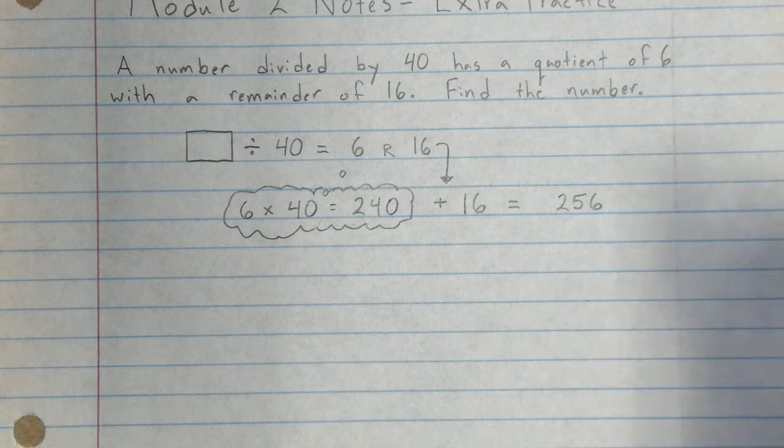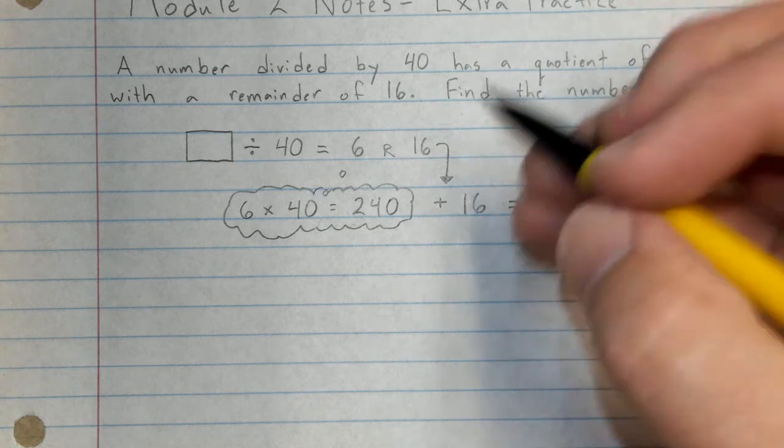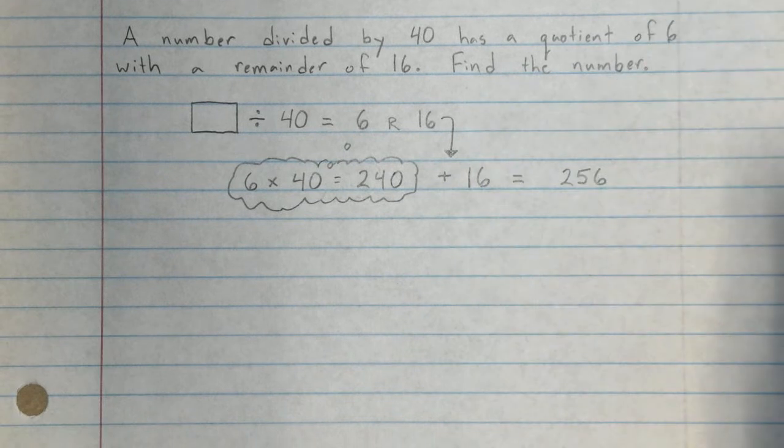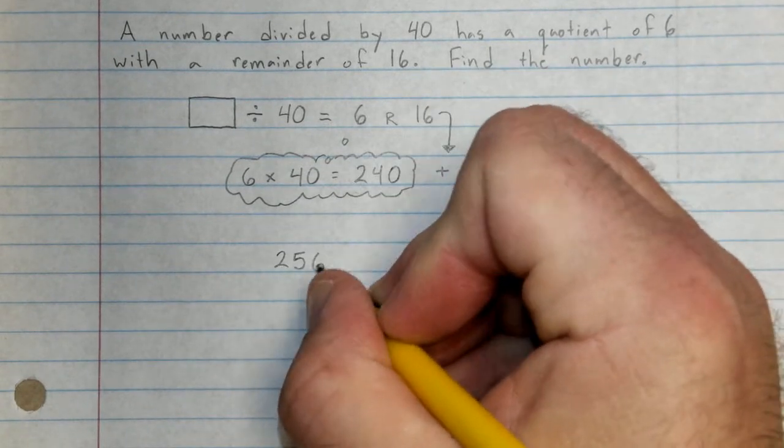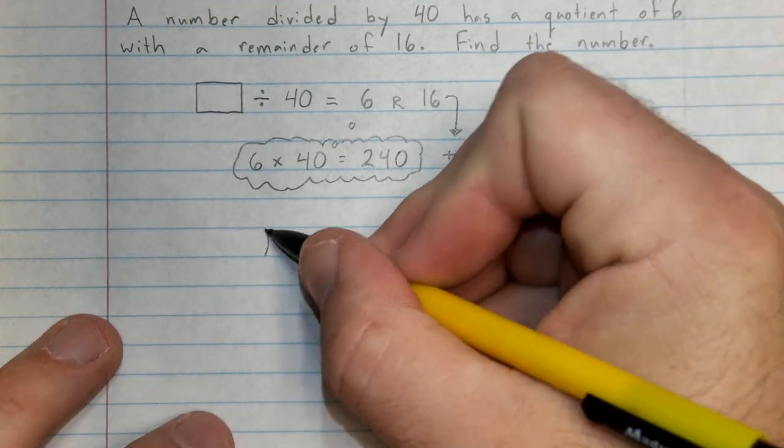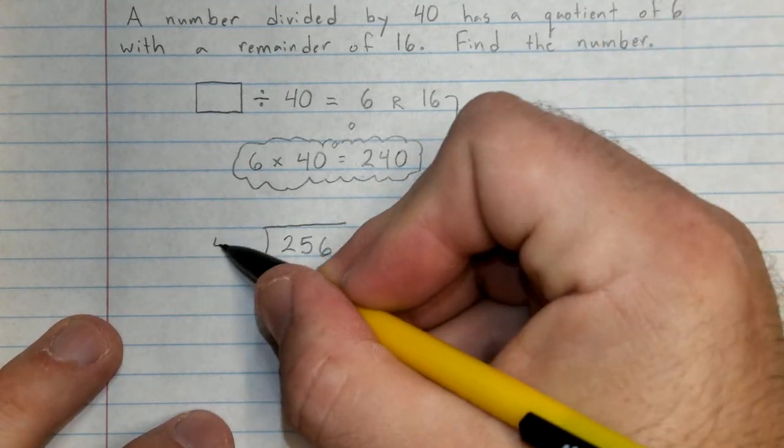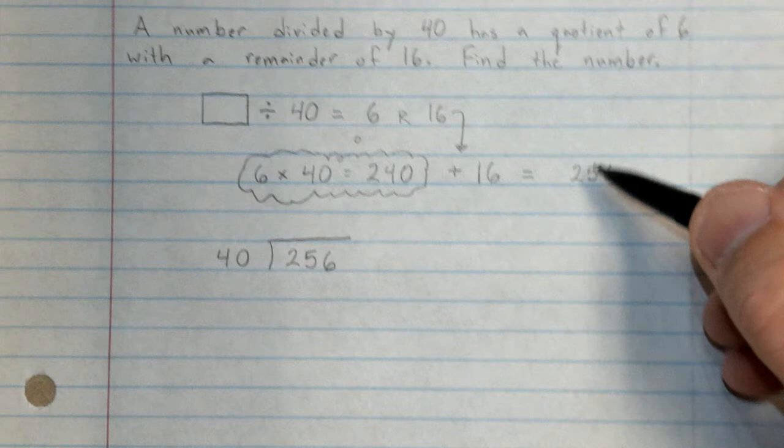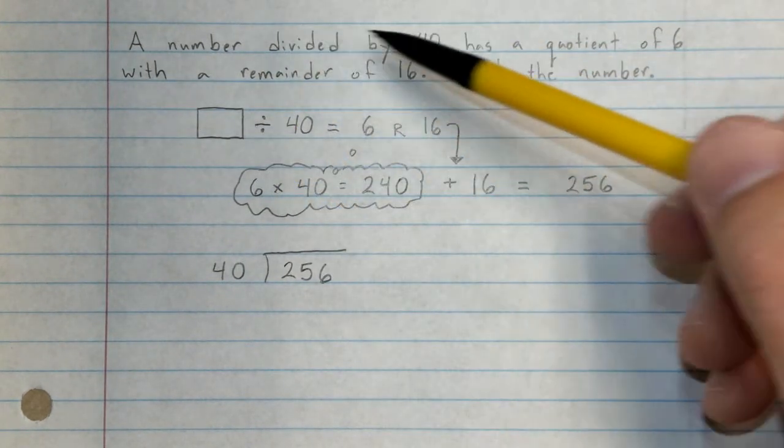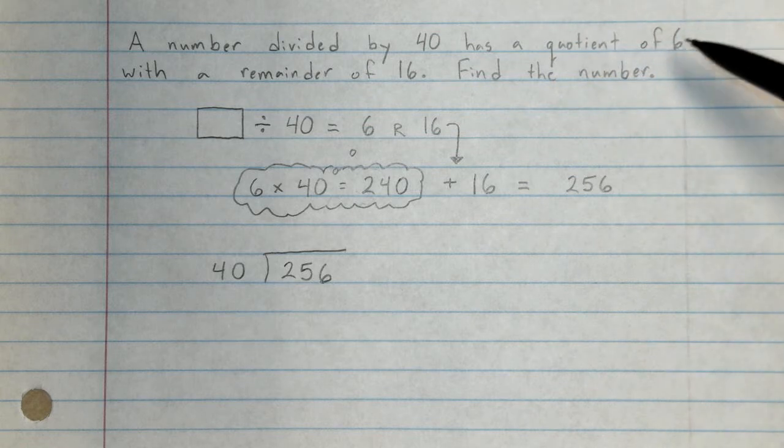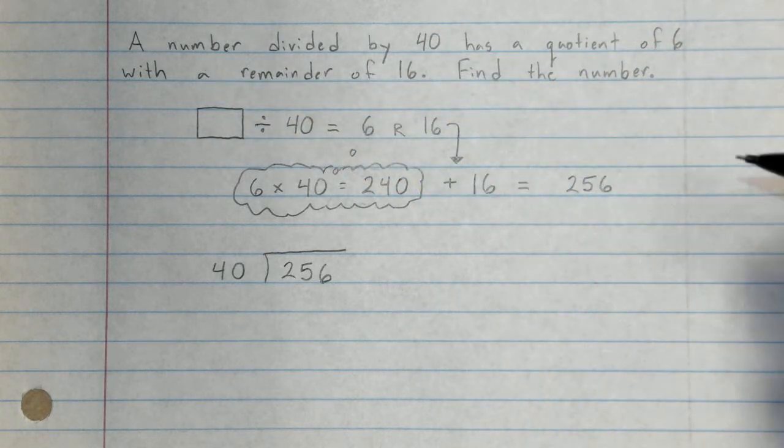Are we correct? Well, we should be, but we can test it. Let's do a little bit of division to make sure. 256 divided by 40. We're saying 256 is our number, and if it is, we should be able to divide it by 40, get a quotient of 6, and a remainder of 16. So we're going to test that and see if it's true.